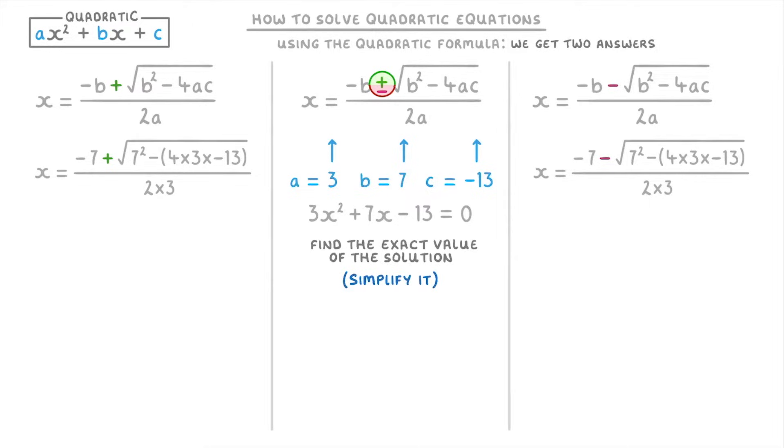If we try this for our minus version on the right, the -7 can't be simplified. But inside the square root we can change the 7² to 49 and the take away 4×3×(-13) to minus negative 156. And then on the bottom we can simplify the 2×3 to just divide by 6. Then if we do the 49 - (-156), the two negatives turn into a plus and we get positive 205 in the square root.